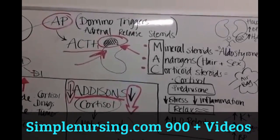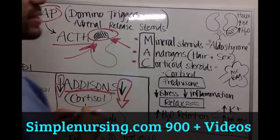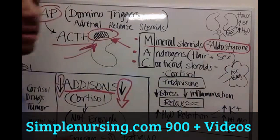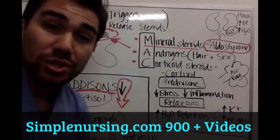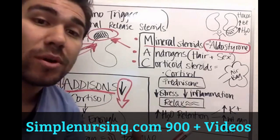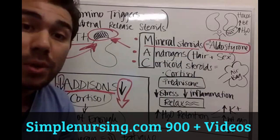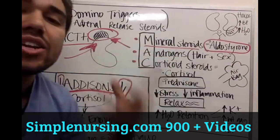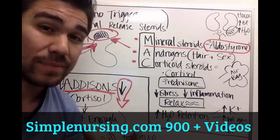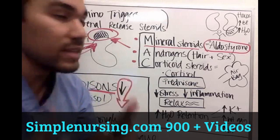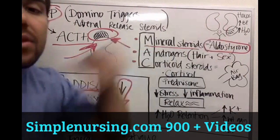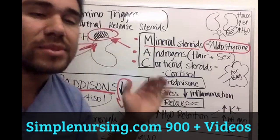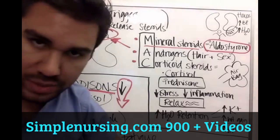MAC stands for Mineralsteroids, and your mineralsteroid produced in the adrenals is aldosterone. Aldosterone is like the bouncer at the nightclub doors of your kidneys — the hormone that says we need to hold on to sodium. Once sodium is retained, we retain water. Once we retain water, we increase pressure in our vascular system, causing blood pressure to rise. If we block aldosterone with something like spironolactone, we eliminate sodium, water follows, and blood pressure decreases.